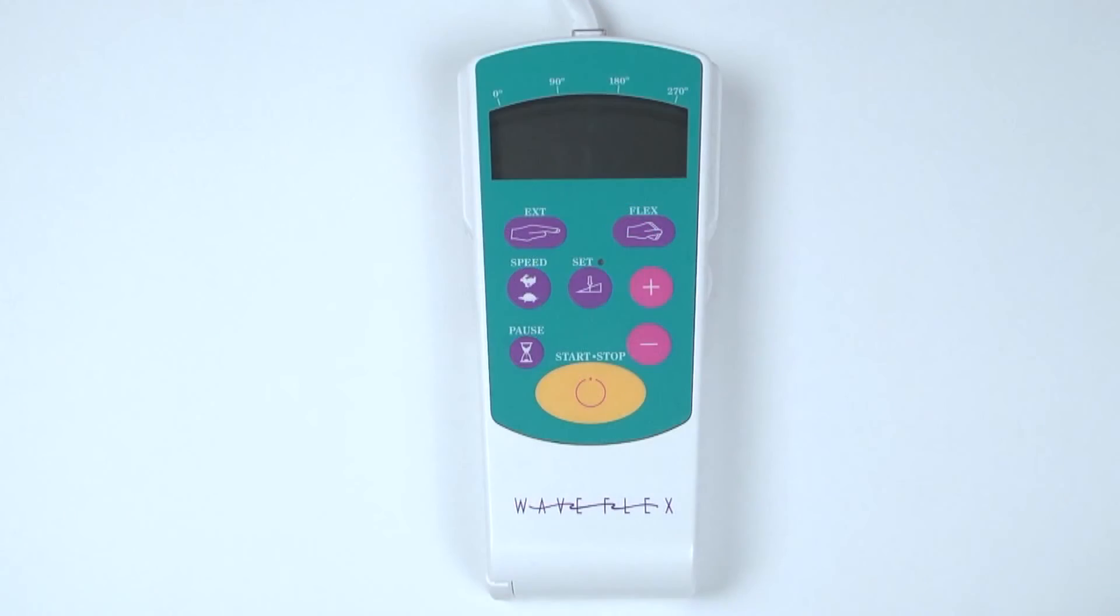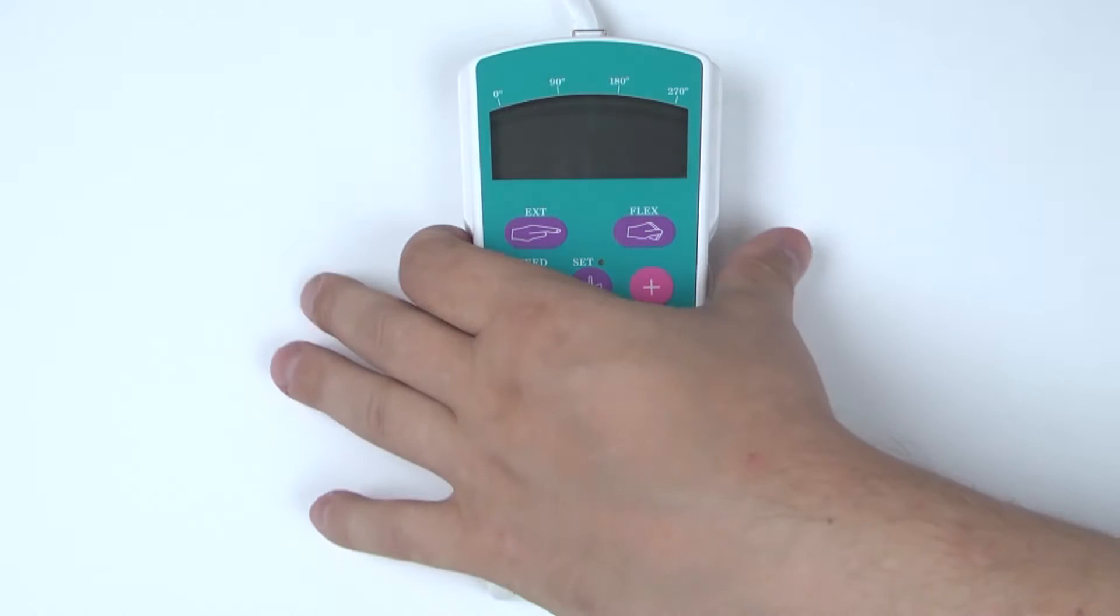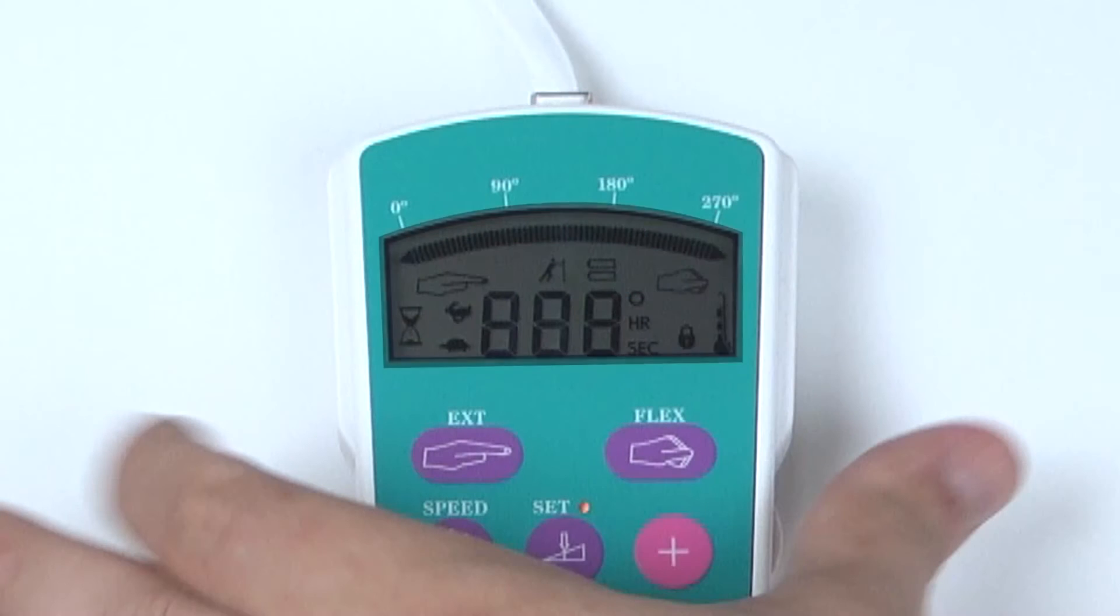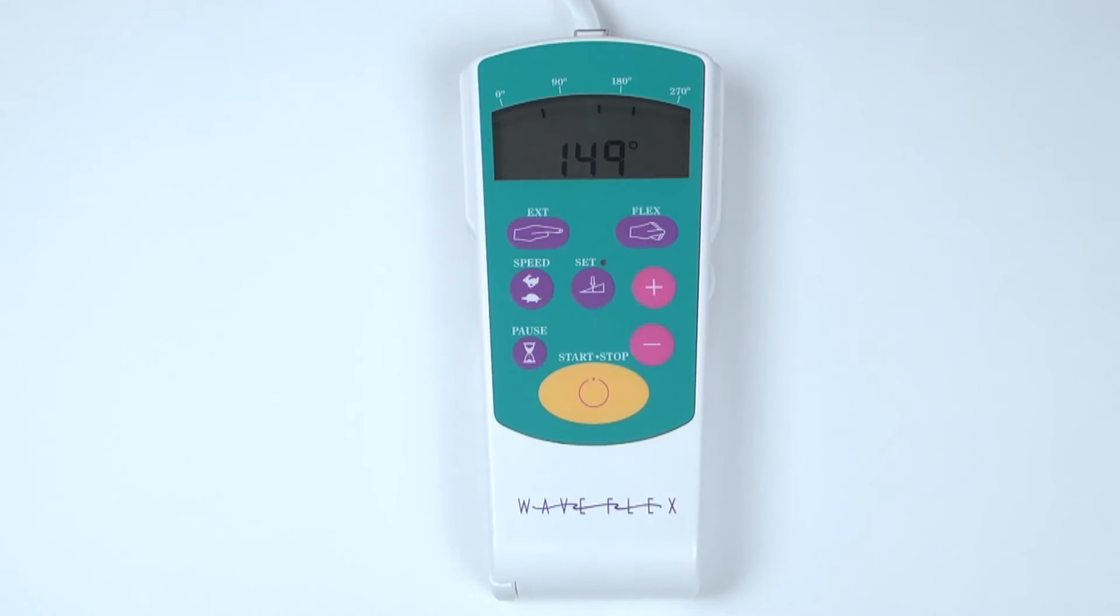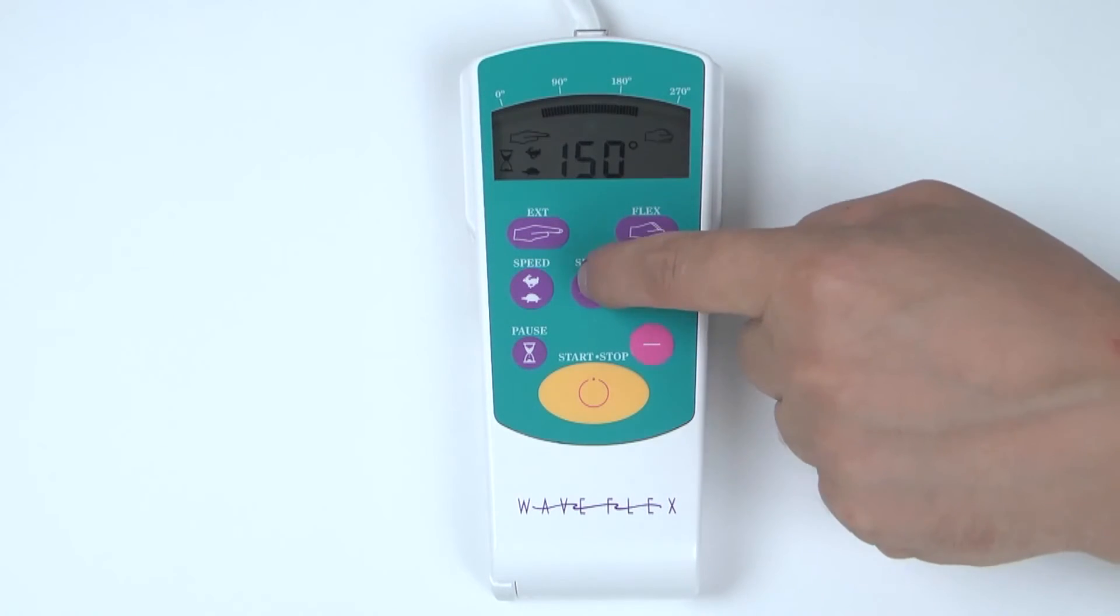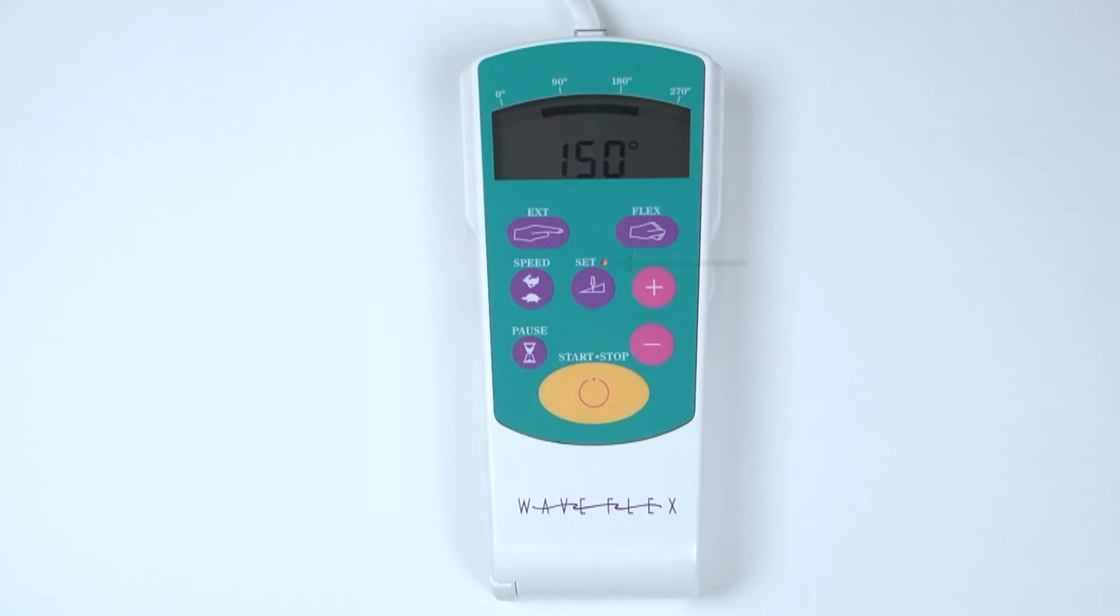To program range of motion, turn the unit on. The on-off button is located on the side of the hand controller. The controller momentarily flashes all the system icons and then permanently displays the present setting. To set range of motion, press the Set button. A yellow set light will appear indicating the controller is ready to receive new programming.